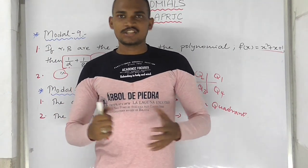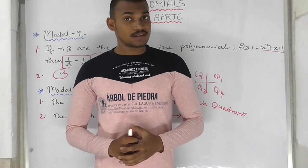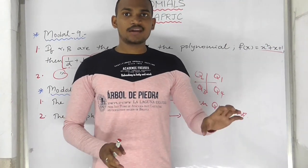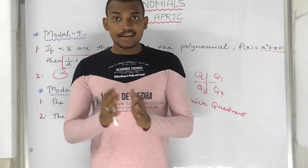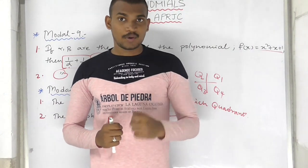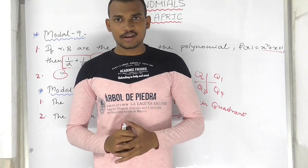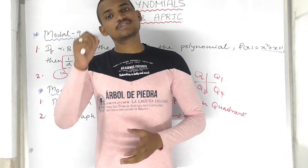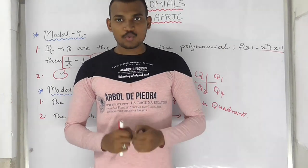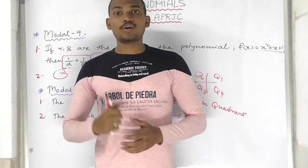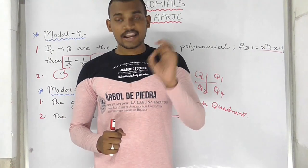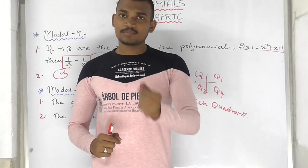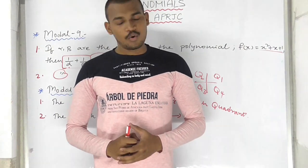What we have discussed today are the top 10 models of polynomials. This chapter is important for APRJC and CIP common entrance exams. Practice these models and you can easily write those exams. If you like this video, please hit the like button, share, and subscribe so you get notifications when we upload. For doubts, you can call us. Thank you — please subscribe to the channel.